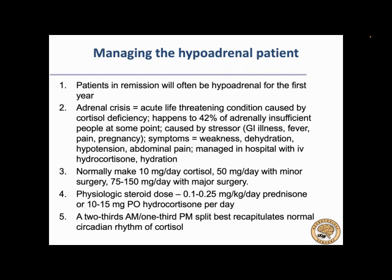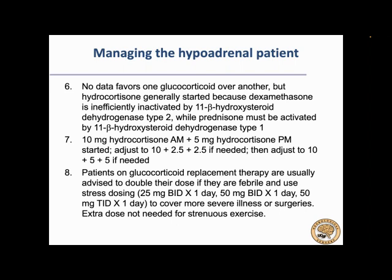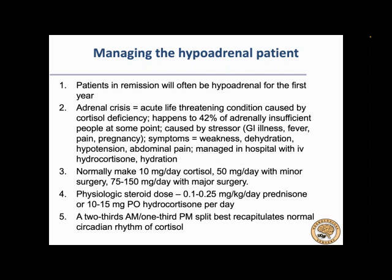No data supports one glucocorticoid over another for steroid replacement — our endocrinologists routinely use hydrocortisone. These patients also need to be told to adjust their dosing if they develop fevers or need stress dosing. This was particularly important during the pandemic, as patients were dealing with potential infection risk and the need to use excess glucocorticoid replacement in our postoperative Cushing's population.